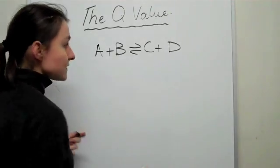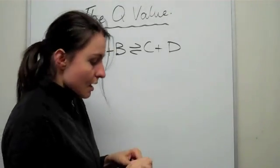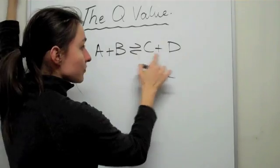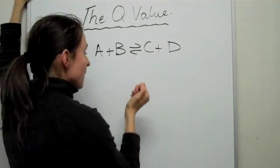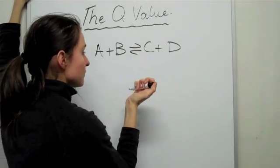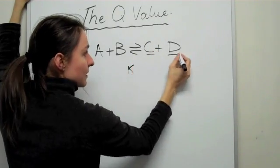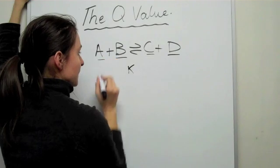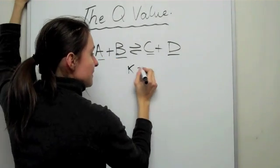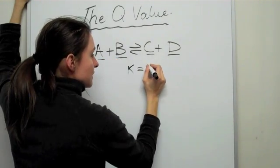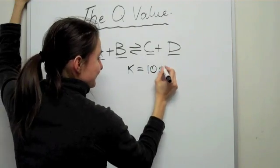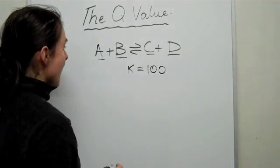All right, and we were saying that equilibrium, once this equation reaches equilibrium, it will have some type of equilibrium constant where you can compare the concentration of this times this divided by the concentration of this times this. Okay, let's say that the equilibrium constant in this case is 100.